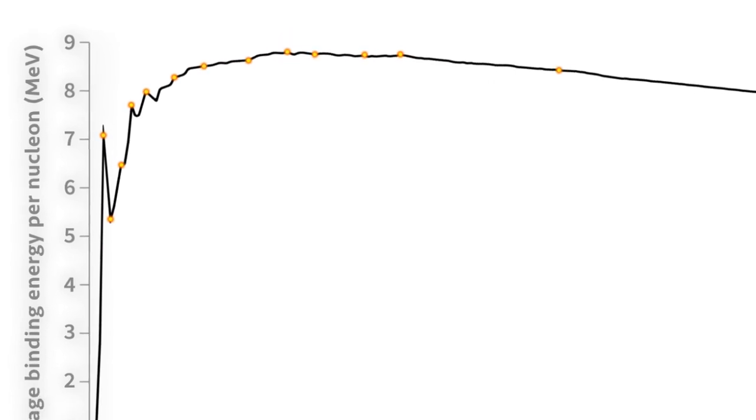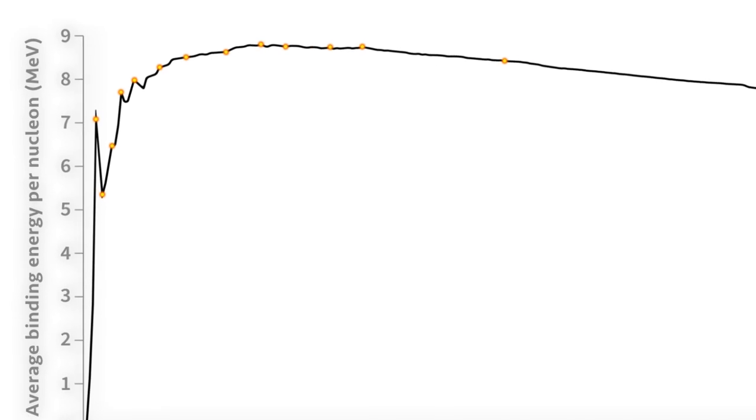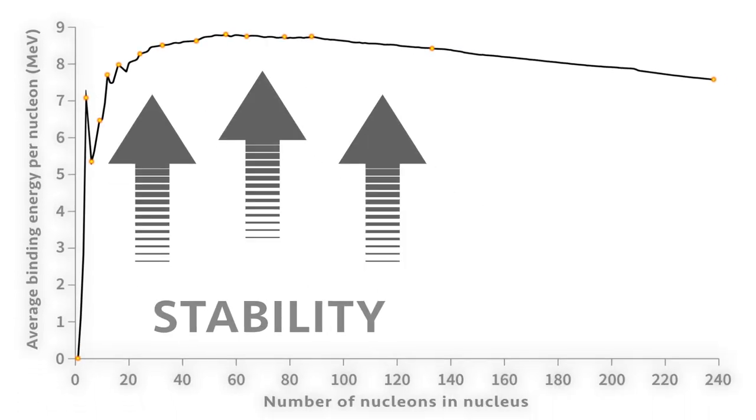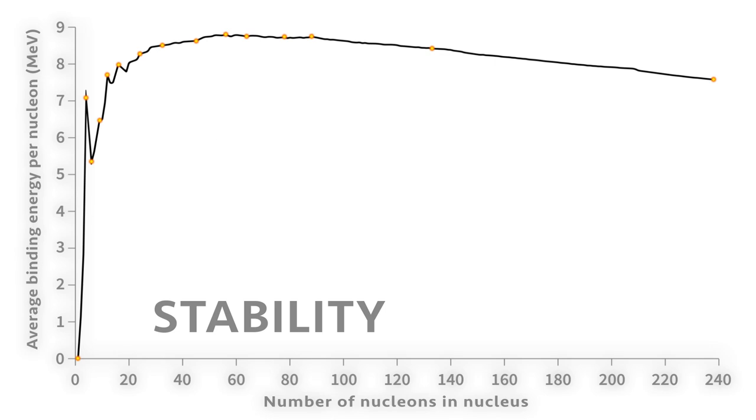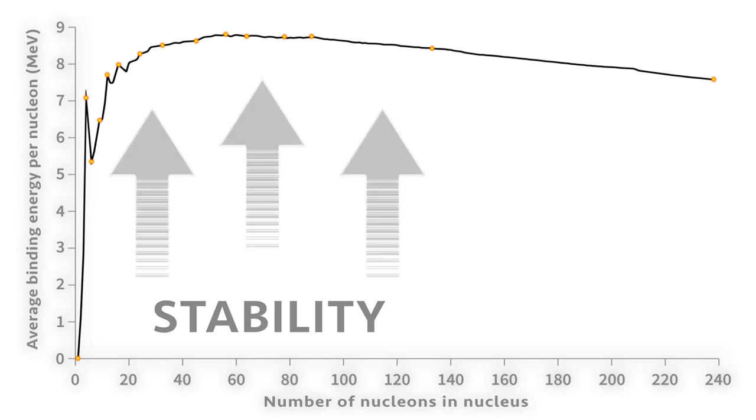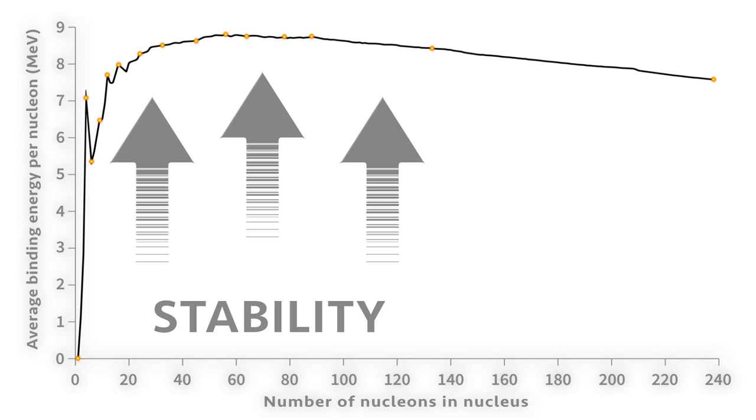Another way to think about this graph is that it shows the relative stability of different nuclei. This curve of nuclear binding energy is the key to understanding nuclear energy and the basis for the incredible power of nuclear weapons.